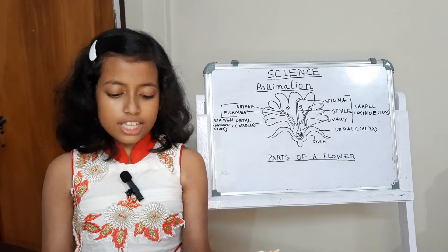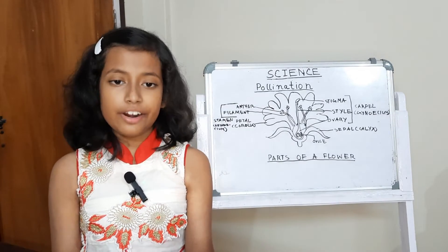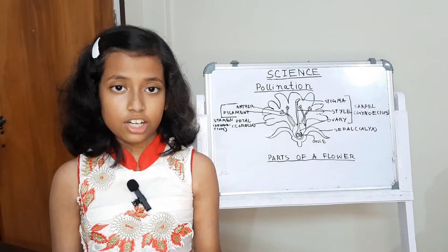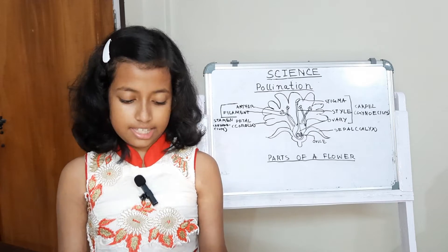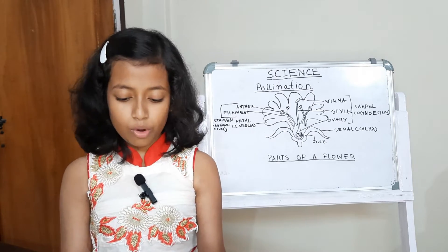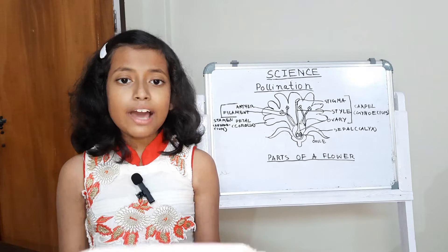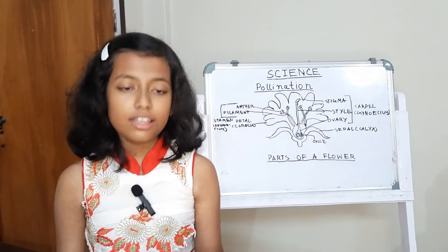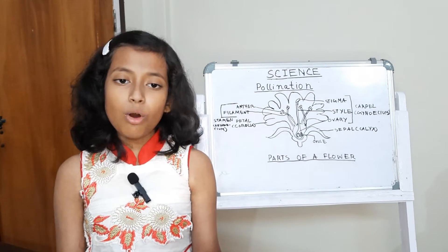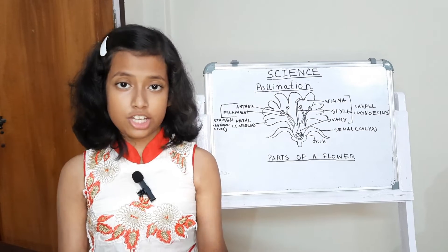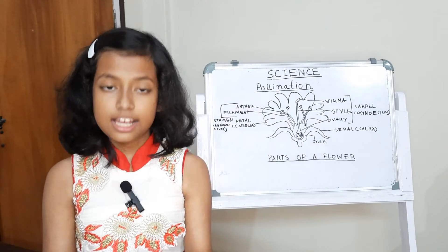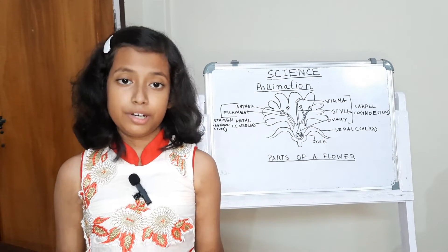Calyx. These parts are arranged in whorls or a circular pattern. Calyx is the outermost whorl. It consists of small green leaf-like structures called sepals. They may be three or more in number. All sepals together are called calyx. They protect the flower at its bud stage.